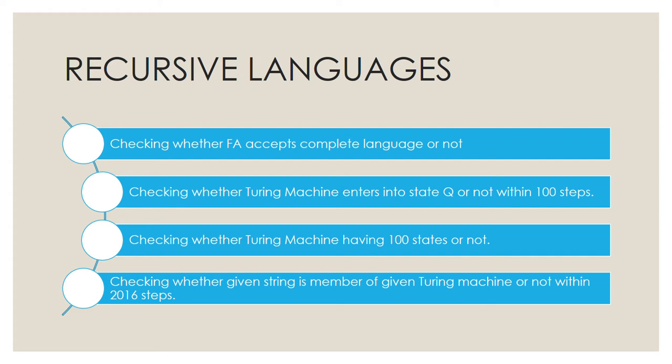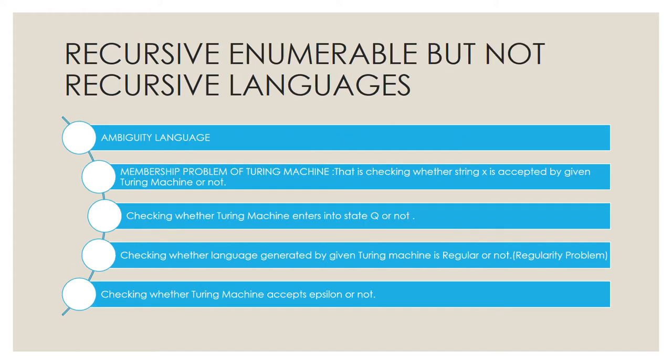Now heading towards recursively enumerable (RE) but not recursive languages. The first example is the ambiguity problem. The second is the membership problem of a Turing machine — checking whether string x is accepted by a given Turing machine or not — which is RE but not recursive.